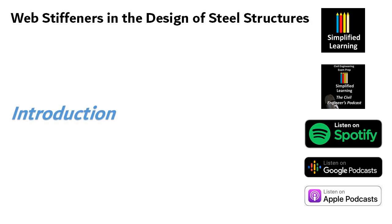Web stiffeners are used to enhance the stability and load carrying capacity of steel beams and girders, especially those subject to high shear forces. We are going to explore the significance of web stiffeners in the design of steel structures, focusing on their purpose, types, design considerations and their role in ensuring safe and efficient construction practices.